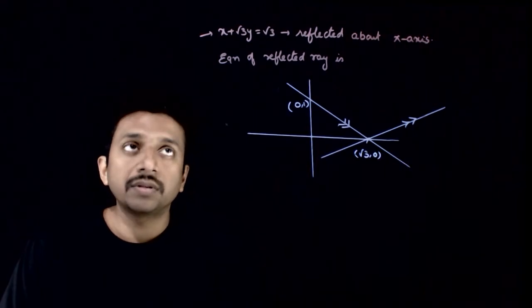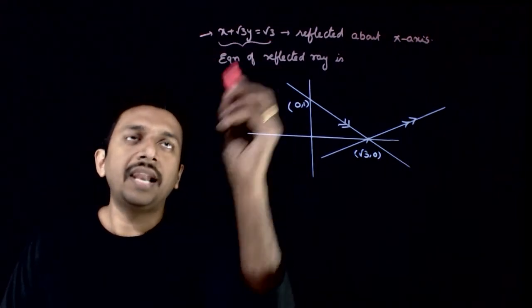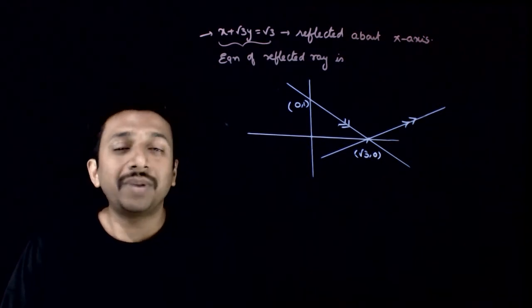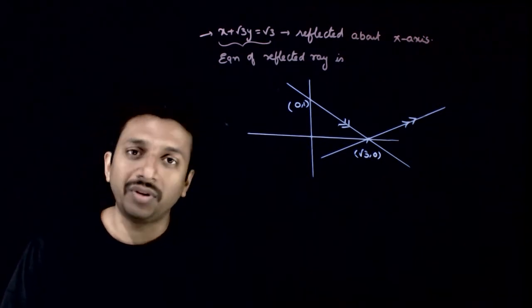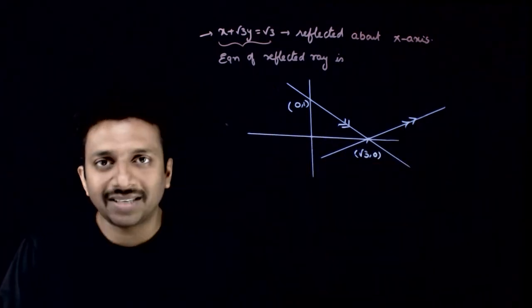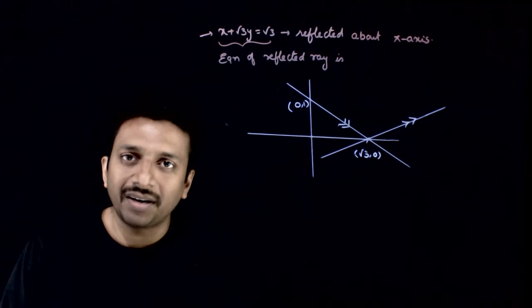Welcome students. This question asks: given that you have a line, x plus root 3 y equals root 3, and this line is getting reflected about the x-axis, what is the equation of the reflected line?